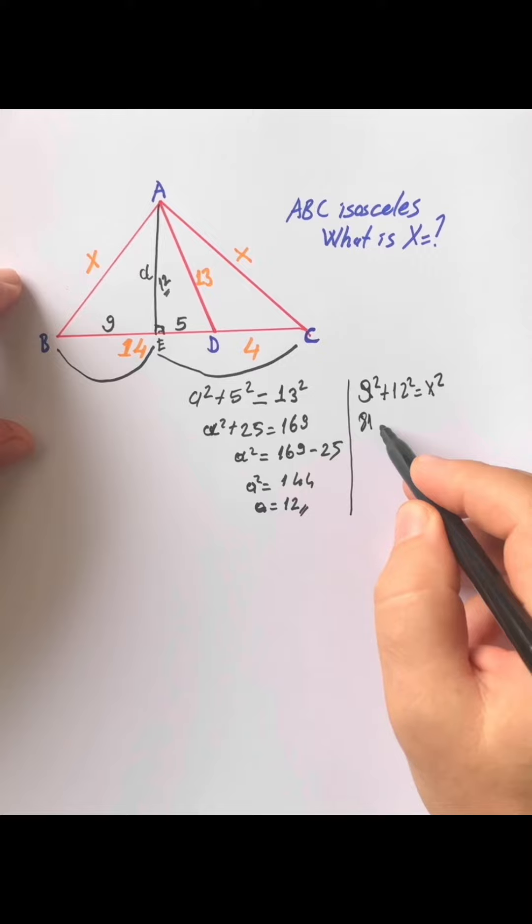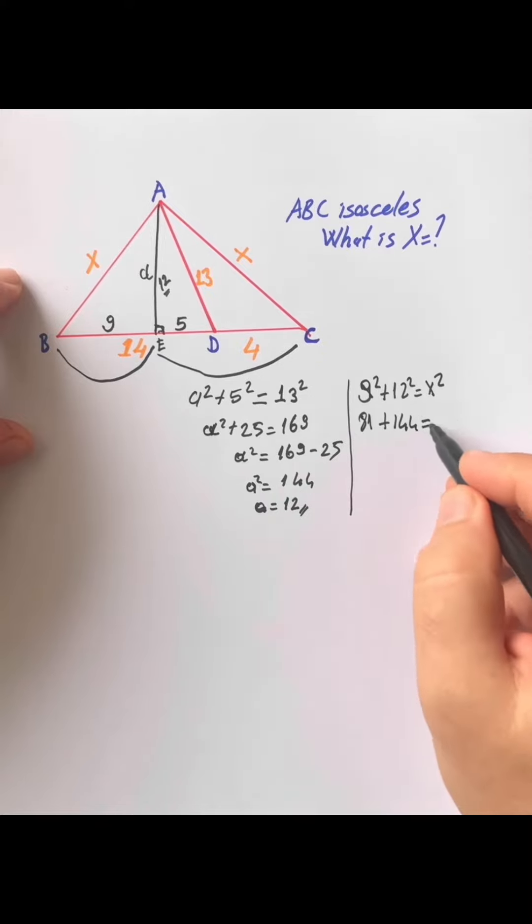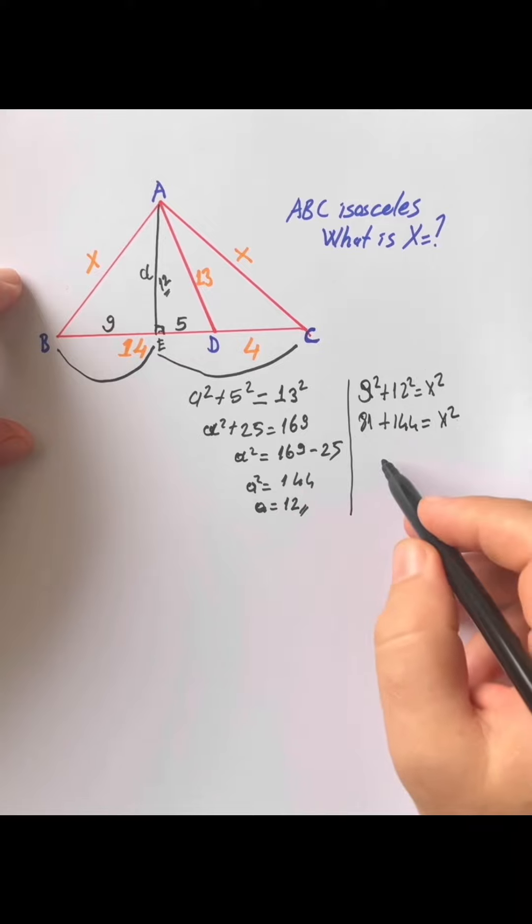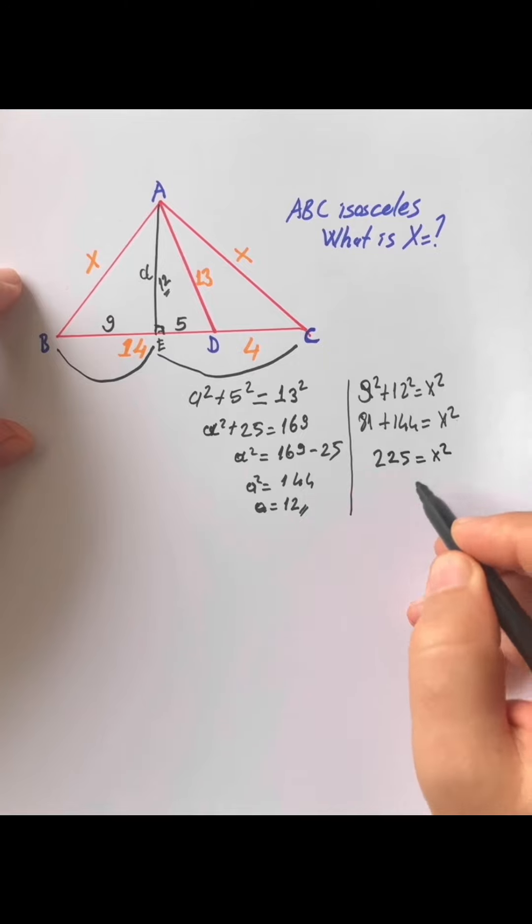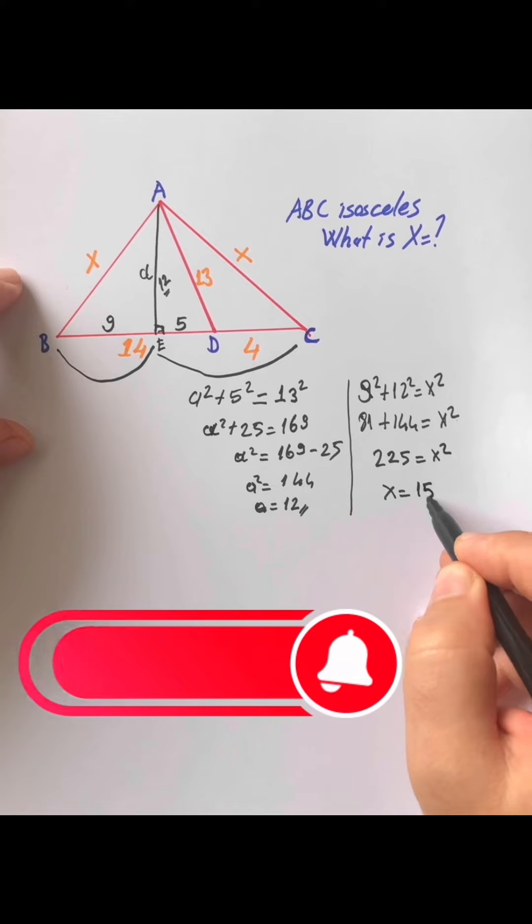81 plus one hundred forty-four equals X squared. Two hundred twenty-five equals X squared. You find X, fifteen units.